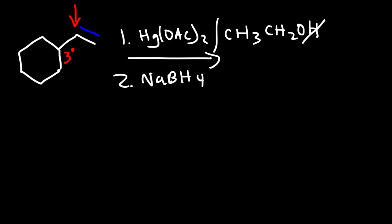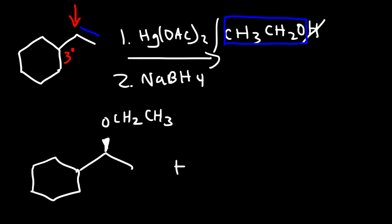So what we're going to do is drop off an H and then add CH3CH2 with the O attached to the other carbon. And so this is going to be the major product. Now keep in mind, you can get a racemic mixture. We do have a chiral center. So we can get two stereoisomers. So this is the other major product.